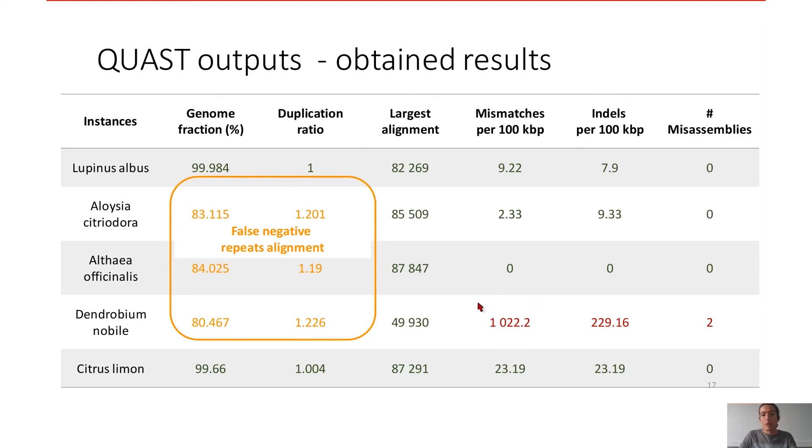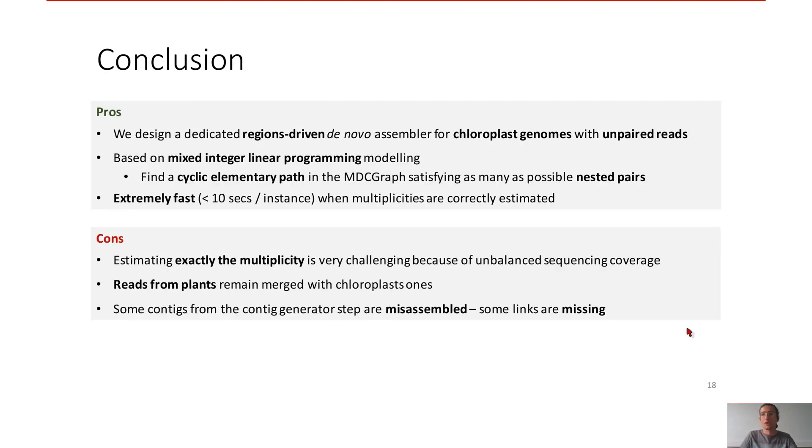But here it's not false negative. We have higher mismatches on index ratio, and it is due to two misassemblies. These misassemblies are due to wrong contigs or links generation, not during the LP step.